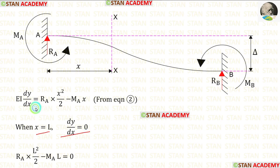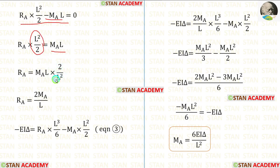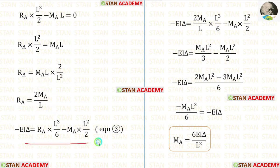Let us apply these values in this equation. When we do that, we will get this result. From here, let us take minus MAL to the right side — it will become positive. And let us take L²/2 to the right side — it will come inversely. Then, let us eliminate L and square. Finally, for RA, we are getting 2MA/L.